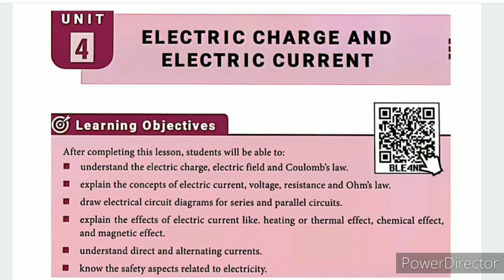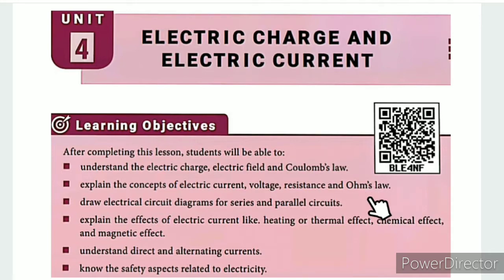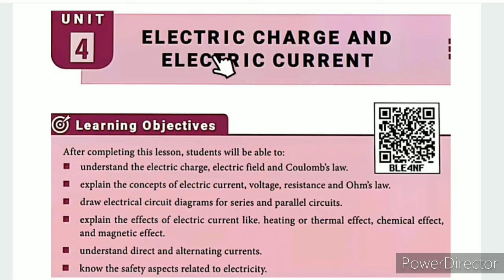This QR code is linked in the description box. The ICT corner link will be in the description box. That link will allow you to explore the circuit connection and the relationship between current and potential difference.